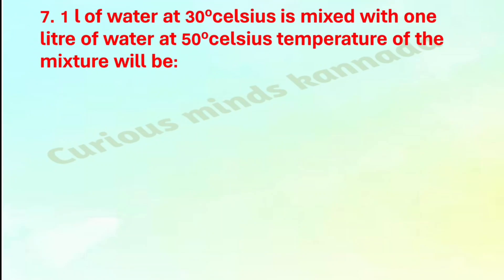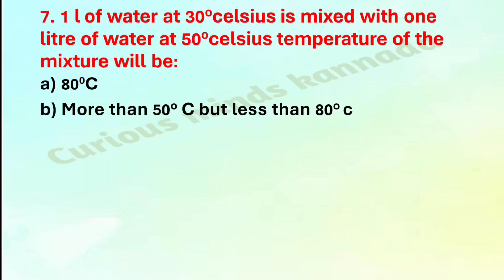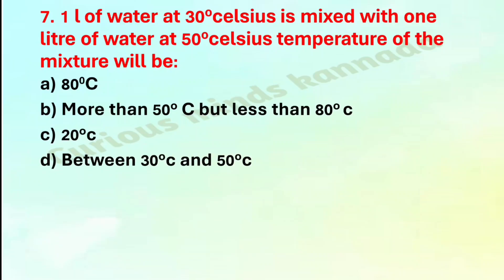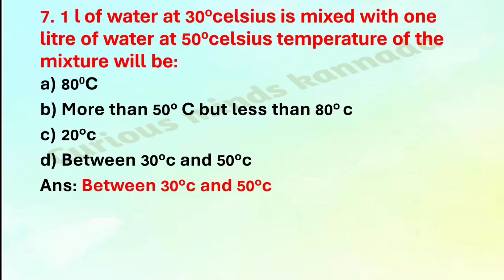Seventh question: one liter of water at 30 degree Celsius is mixed with one liter of water at 50 degree Celsius. Temperature of the mixture will be — option A: 80 degree Celsius, B: more than 50 but less than 80 degree Celsius, C: 20 degree Celsius, D: between 30 degree and 50 degree Celsius. Correct answer is option D: between 30 degree and 50 degree Celsius.